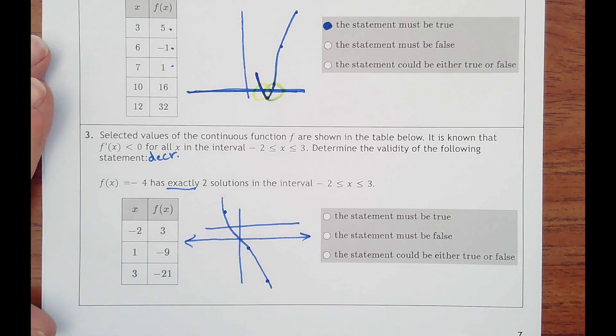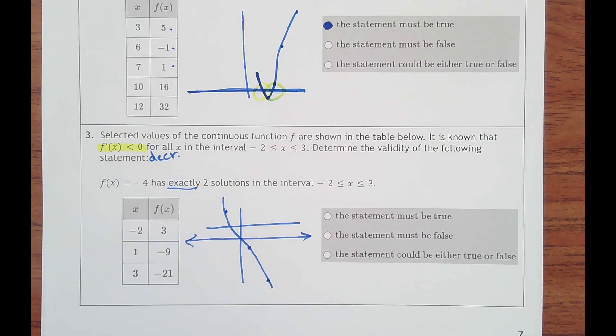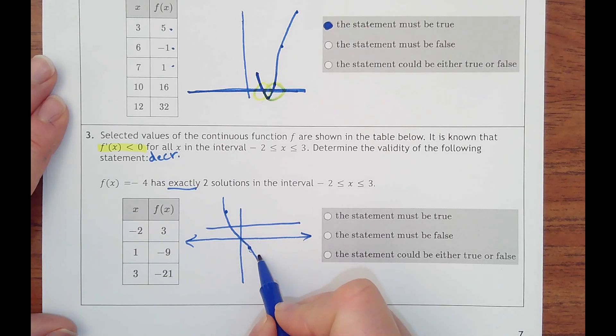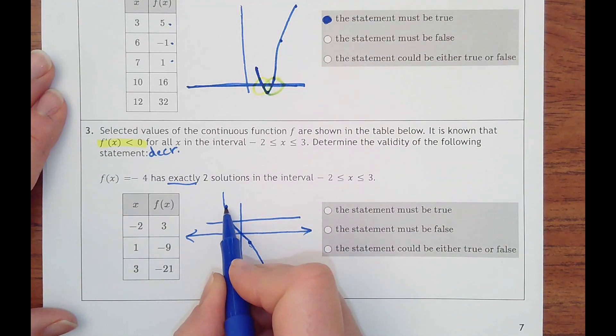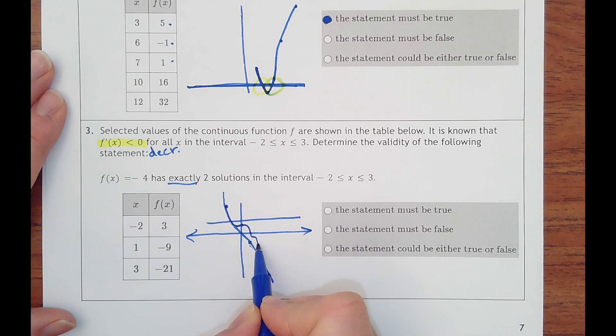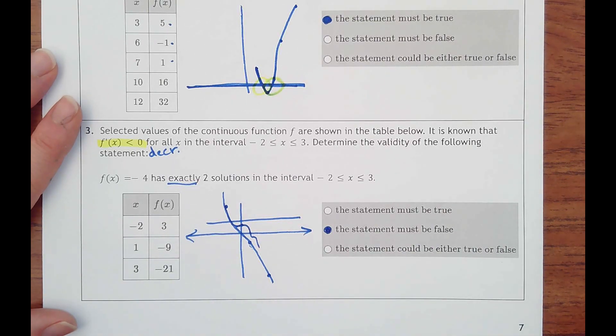The other very, very important information is that f prime of x is negative throughout the whole interval of negative two to three. So this function could never come back up and cross that line again. Every time it should be decreasing somehow. It might have some crazy behavior like this or something, but still only one time. So that is definitely false. Could not be true ever.